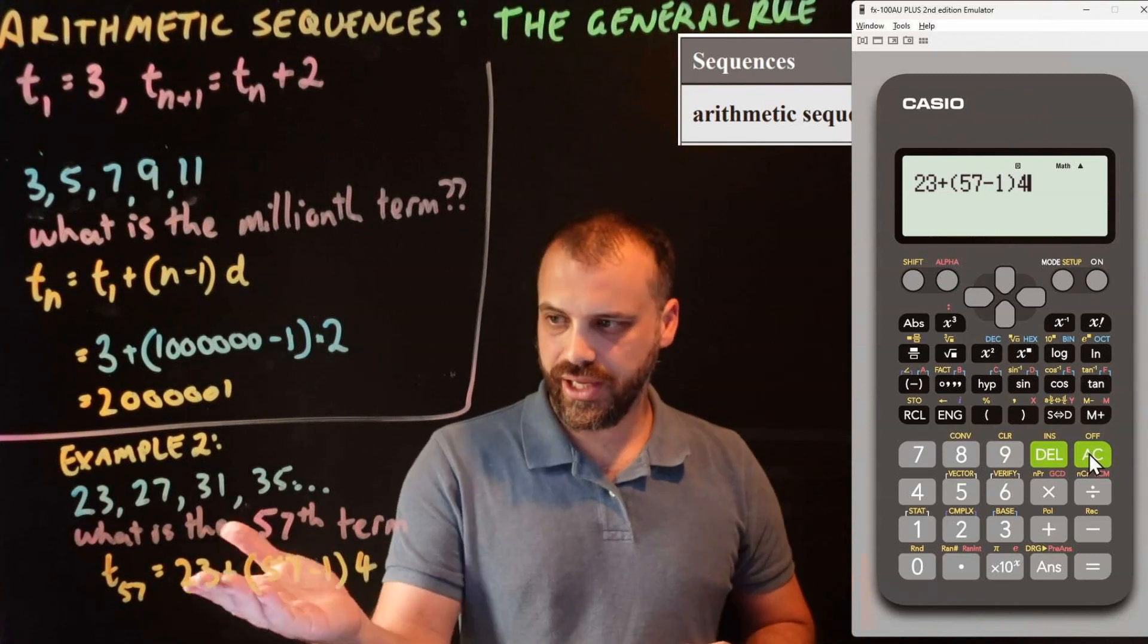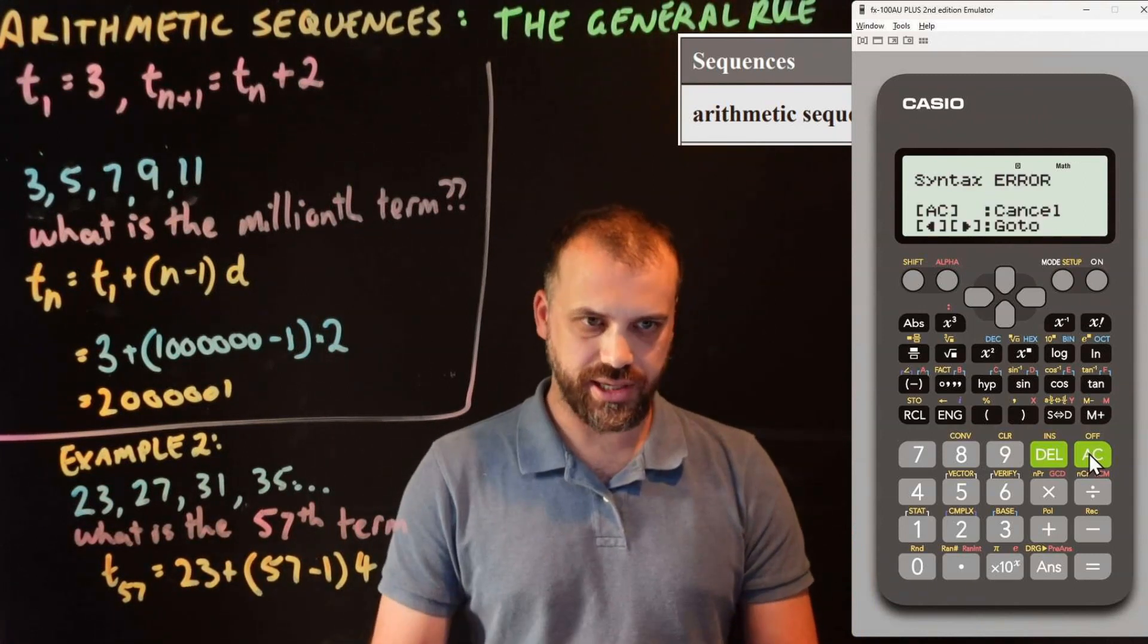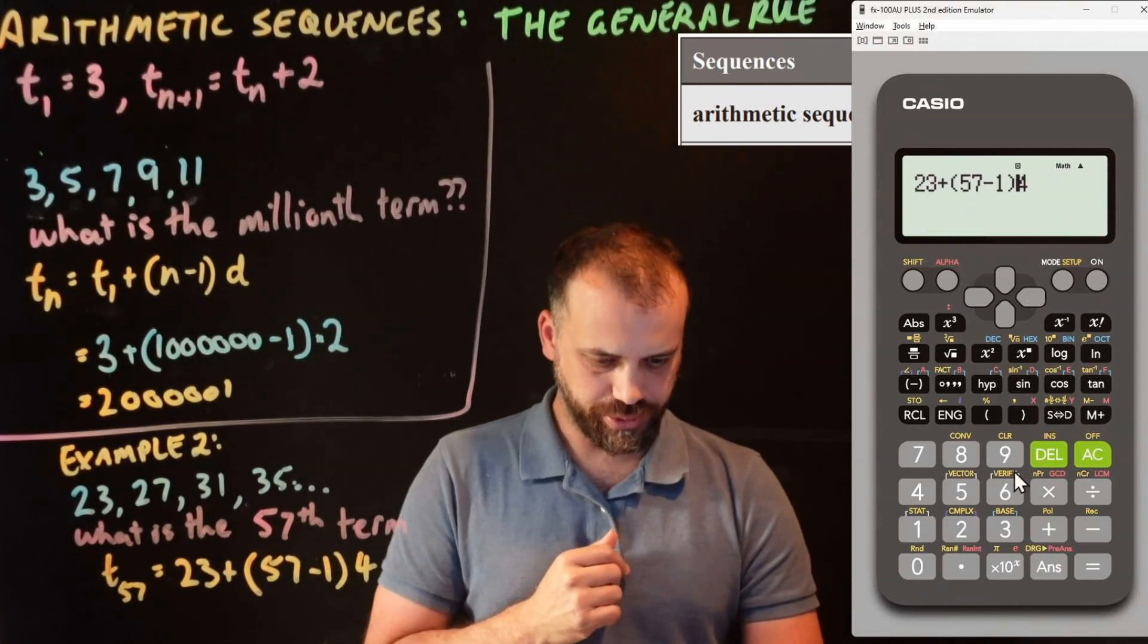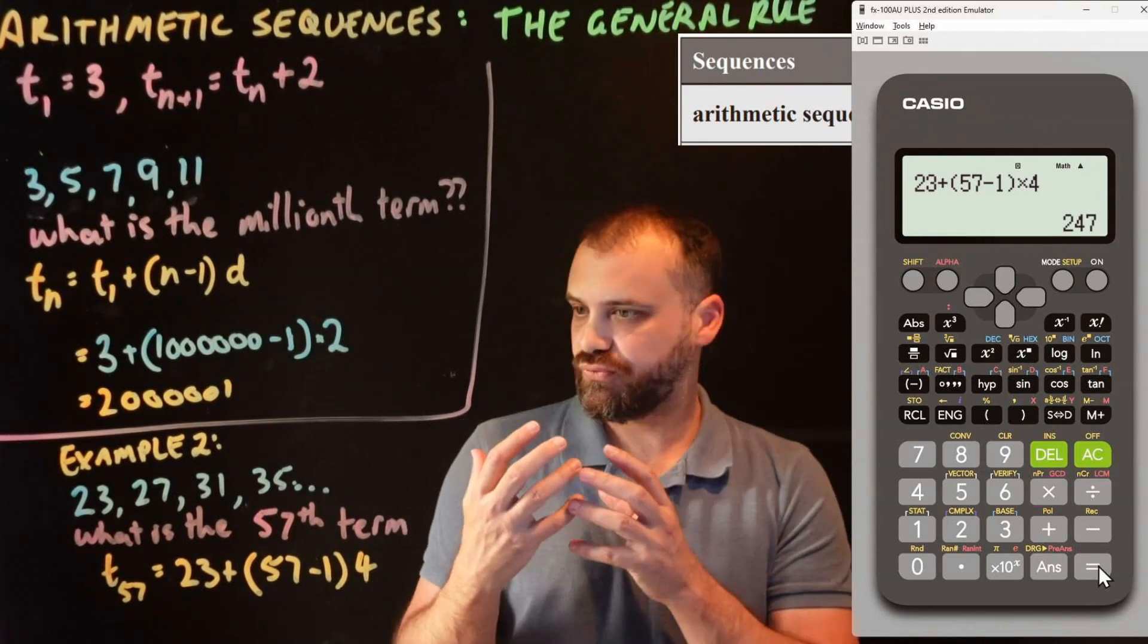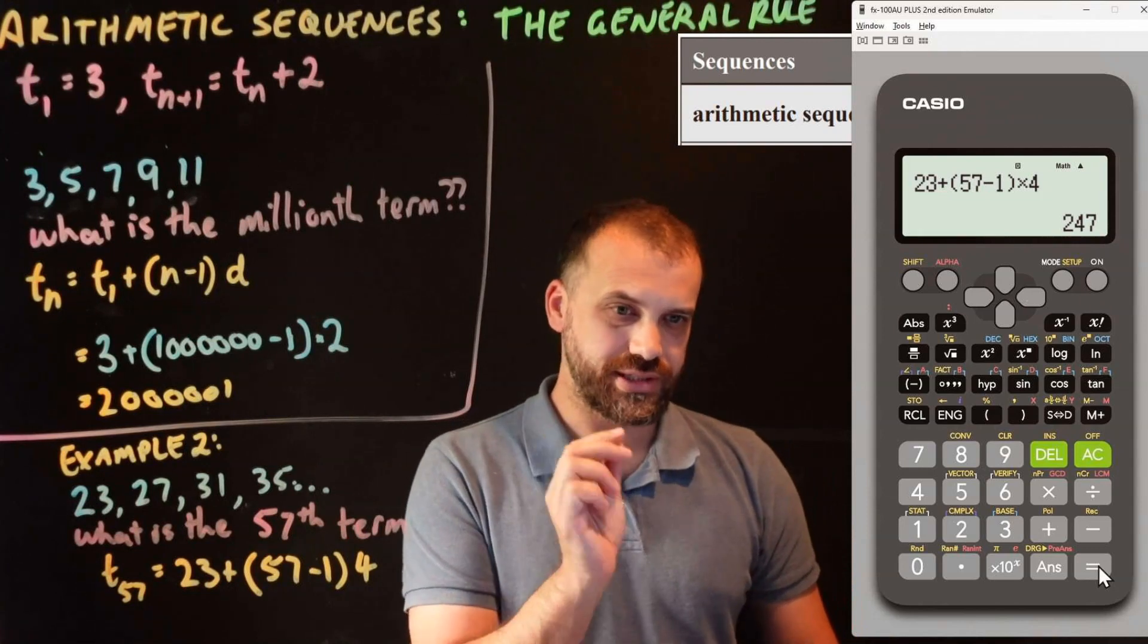If you do, syntax error. So what you need to do is put a little multiply sign in there next to that bracket. Bam. Our 57th term is 247.